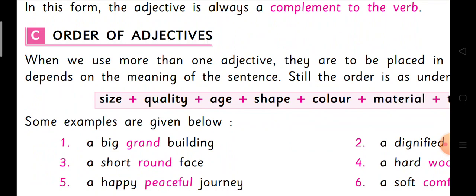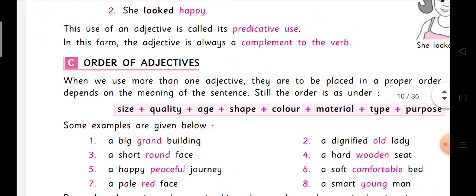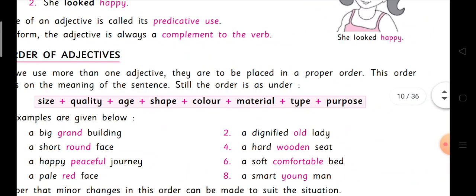For adjectives, if only one adjective is there we know where to use it, but if there are more than one, there should be an arrangement. An order is given here that you have to study and learn by heart — you have to memorize this.